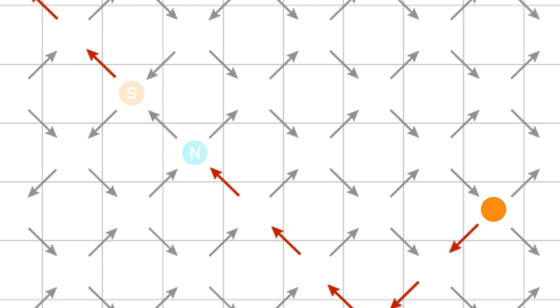If the spin on the lower right flips, the spins will go back to the two-in, two-out configuration and both monopoles will disappear.